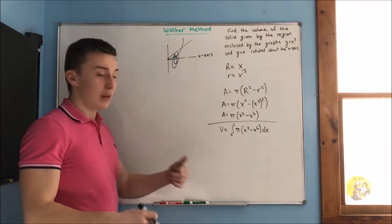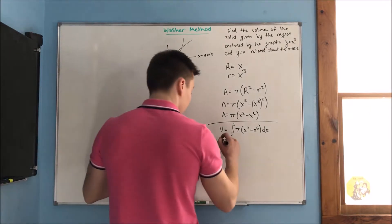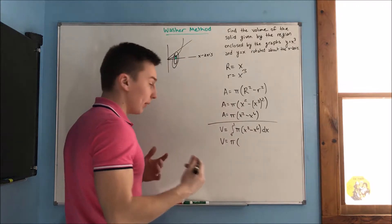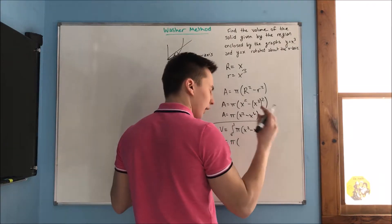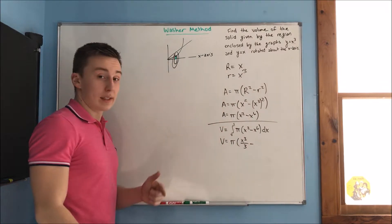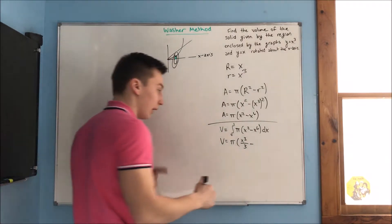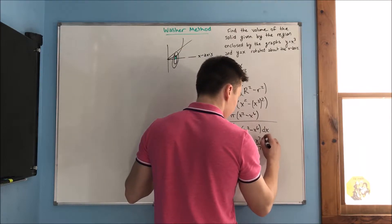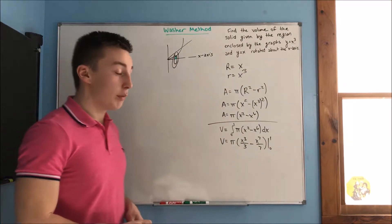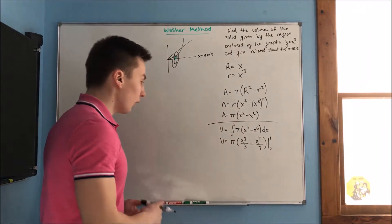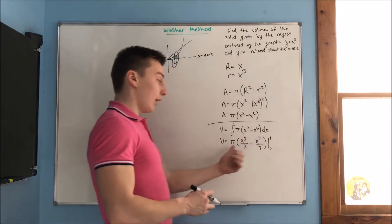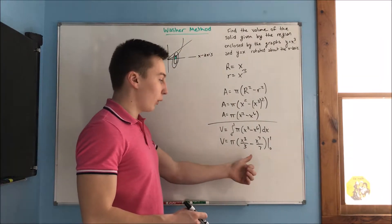We can pull that pi out and then integrate. Volume is going to equal pi times — the integral of x squared is x cubed over 3, and the integral of x to the sixth is x to the seventh over 7 — and that is going to be evaluated from 0 to 1. When we plug in 0, it's not really going to give us anything; we're going to get 0 minus 0.